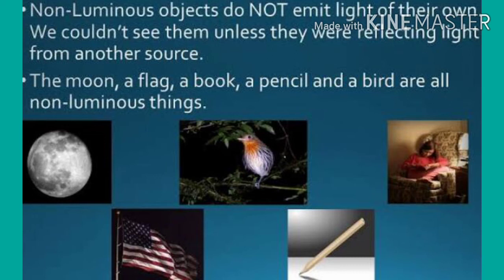What is a luminous object? The objects which give out or emit light of their own are called luminous objects. For example: sun, torch, candle, and emergency lamp are all luminous objects. What about non-luminous objects? Non-luminous objects are those which do not have their own light. Examples include the moon, table, chair, and wall — these are all non-luminous objects.